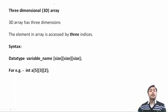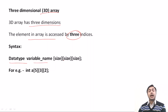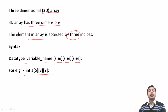In the case of a 3D array, it has three dimensions. The array elements are accessed using three indexes. The syntax is: data type, then array name, then size1, size2, size3. For example, int a[5][3][2].